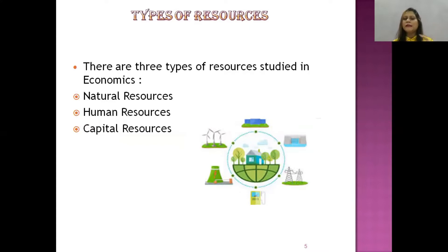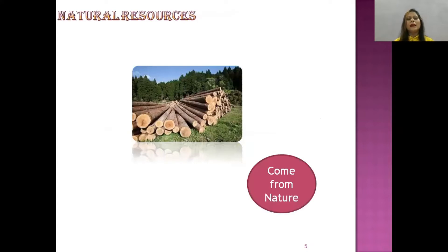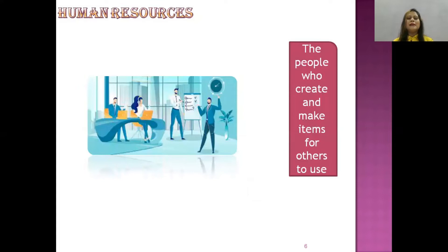First one is natural resources, second one is human resources, and the third one is capital resources. Natural resources are the resources that come from nature — like wood from the trees, coal from the earth.